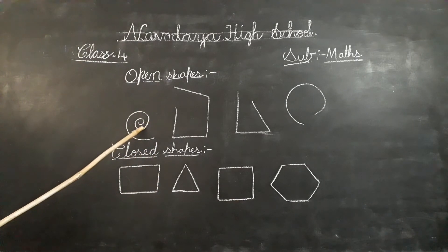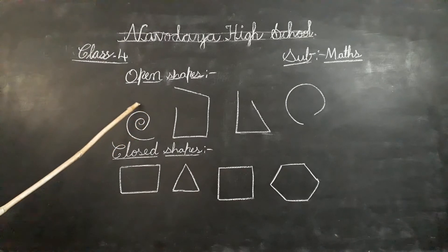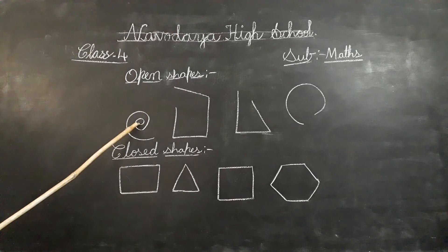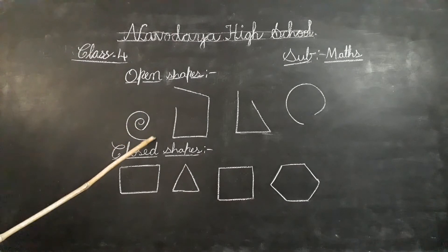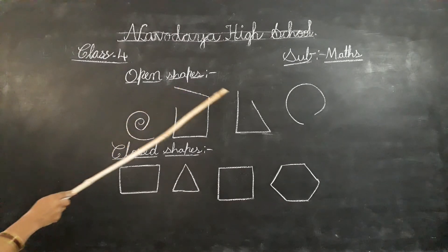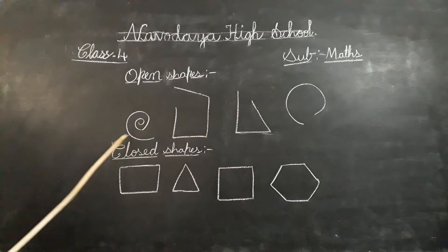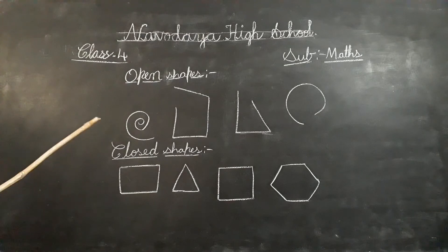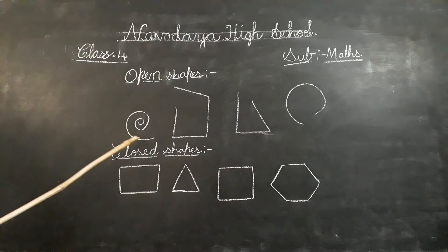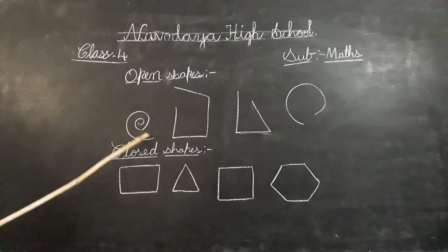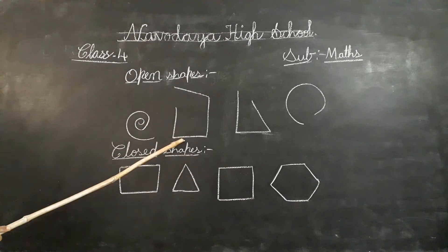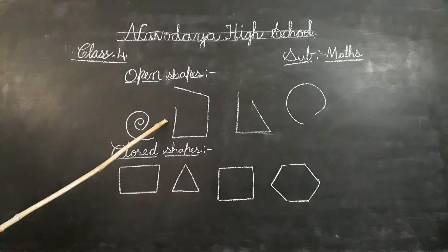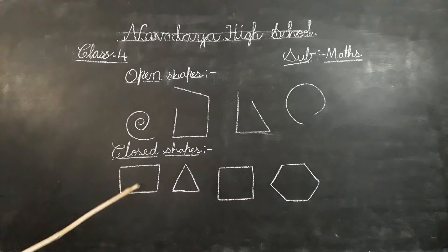Open shapes. The two end points of these shapes are visible. This is the starting point and the ending point. A gap can be seen between the end points of the shapes; they are not connected with one another. Such figures or shapes with open ends are called open shapes.